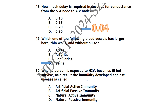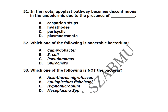When a person is exposed to HIV, becomes ill, but survives as a result of immunity developed against the disease, it is called natural active immunity. Which one of the following is an anaerobic bacterium? It is Spirochete.